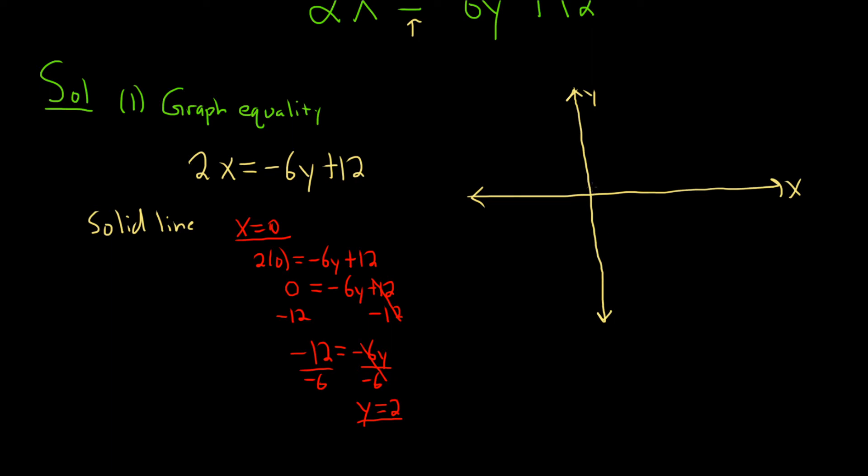So we can go right 0 and up 2 and put a dot. Now let's make y equal to 0. When y equals 0, we end up with 2x equals negative 6 times 0 plus 12. So 2x is going to be equal to 0 plus 12. So 2x is equal to 12. So solving for x, we'll divide by 2. And that's because it's being multiplied. So we do the inverse operation. So x is equal to 6.